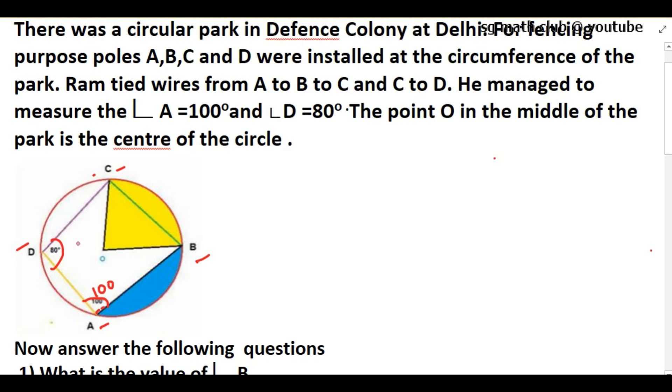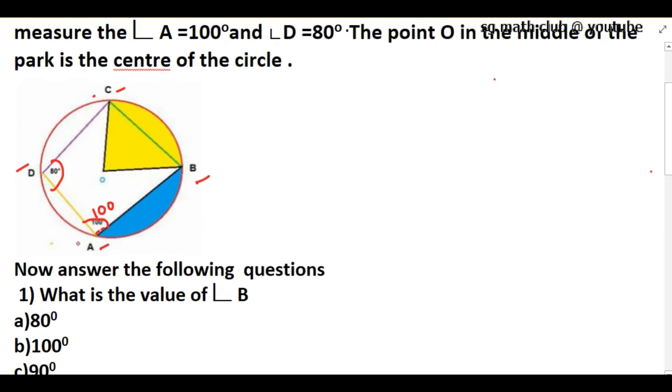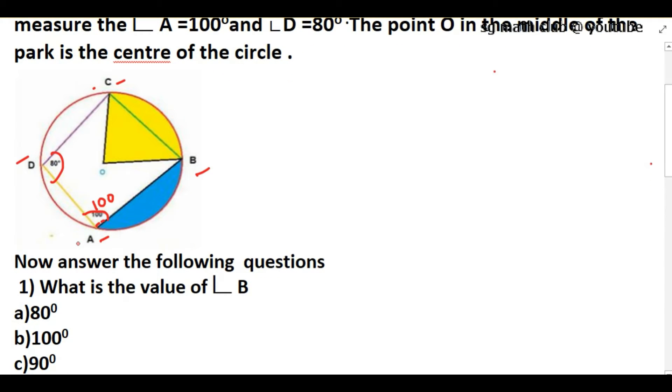Now we need to answer the following questions. What is the value of angle B? First of all, ABCD is a cyclic quadrilateral. A cyclic quadrilateral is a quadrilateral whose vertices lie on the circle.